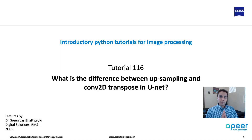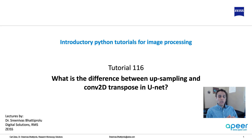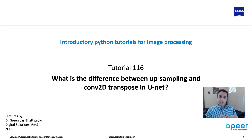Hi everyone, welcome to introductory Python tutorials with a special focus on image processing. In this video let's have a quick look at the difference between upsampling and the convolutional transpose operation. Both of these can be in 2D and 3D, and they commonly get used in U-Nets and also in other architectures like autoencoders and generative adversarial networks.